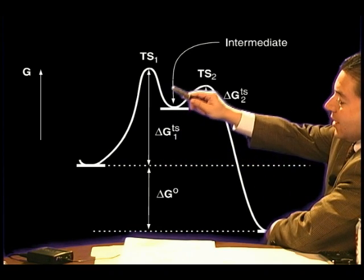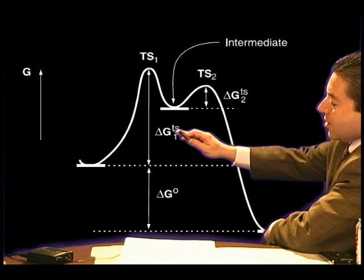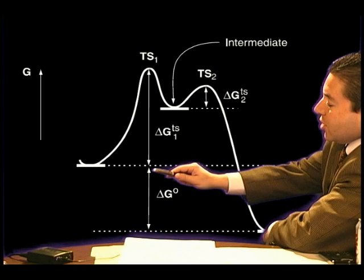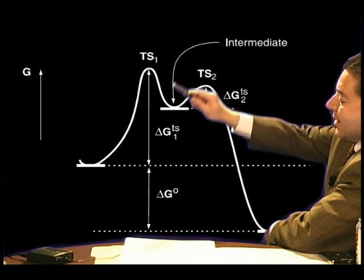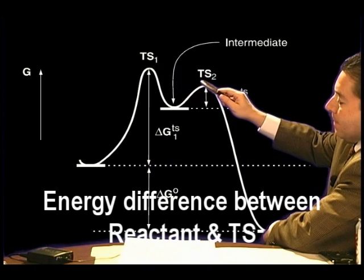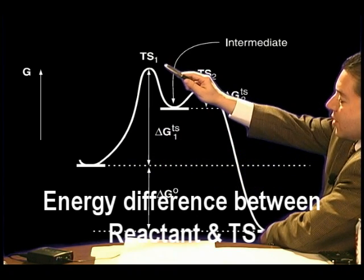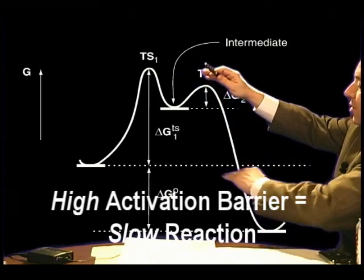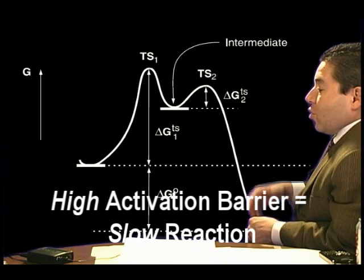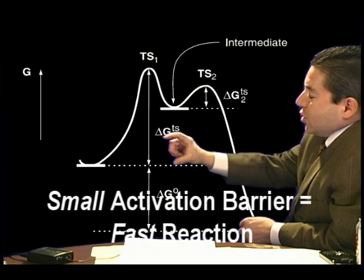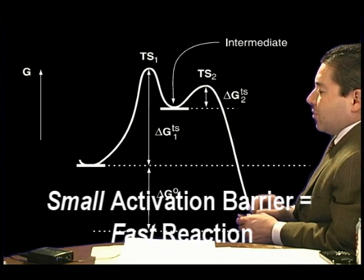On the other hand, we have the kinetics of a reaction. The kinetics is not the delta G naught, but the delta G transition state. We're talking about the energy transitions between the reactant and the transition states. This delta G1 transition is the reactant in transition to transition state 1. A very high transition state, or high activation barrier, corresponds to a slow reaction. A very small activation barrier is a fast reaction.